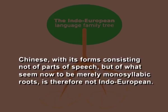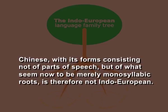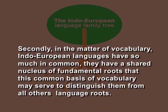As we think of its forms fairly readily as nouns, verbs, adjectives, etc., English is undoubtedly Indo-European because it uses parts of speech. Chinese, with its forms consisting not of parts of speech but of what seem to be merely monosyllabic roots, is therefore not Indo-European. Secondly, in the matter of vocabulary, the Indo-European languages have so much in common — they have a shared nucleus of fundamental roots that this common basis of vocabulary may serve to distinguish them from all other language groups.